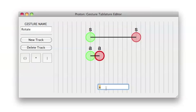To indicate that the touch hitting the star must come down first, the developer moves the green node of the bottom track to the right of the green node of the top track.